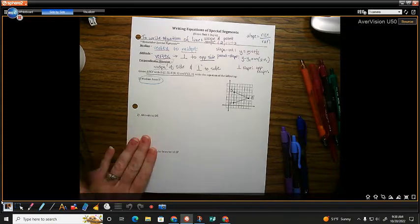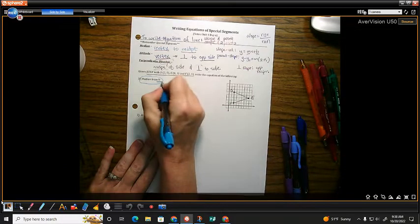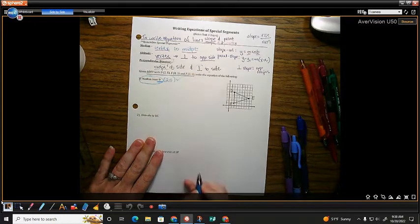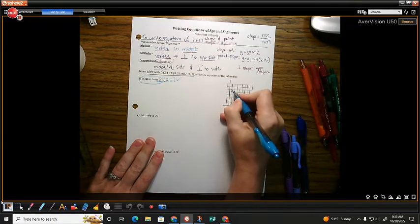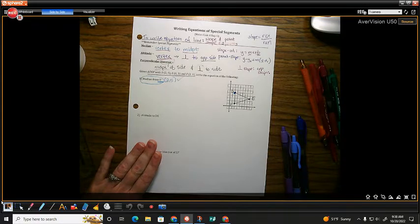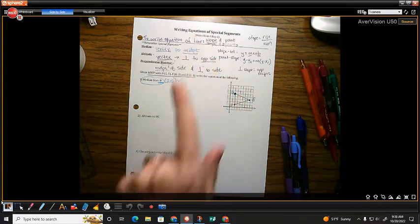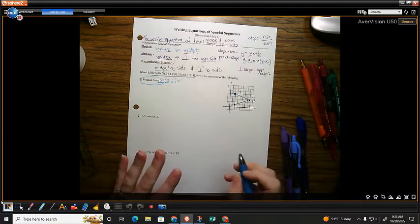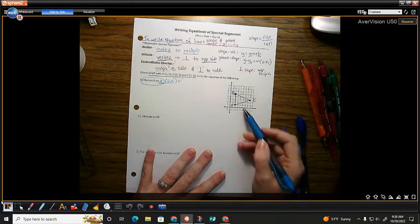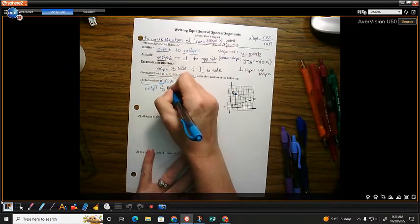So if I'm drawing the median, where is my median starting? Which vertex? D. Well, where is point D? At 2, 5. So I've already got my point. It's up here at point D. What else is true about medians? It's all written down on your notes. What else about medians? They go through the? The midpoint of the opposite side. So which side are we going to midpoint? EF. EF or FE. Whatever you want to call it. Okay. So I need to find the midpoint of FE.